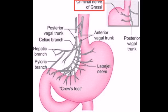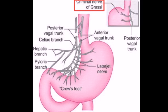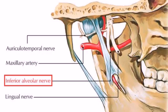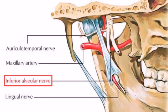What is the criminal nerve of Grassi? The criminal nerve of Grassi is a branch of the right posterior vagus nerve. Which nerve is the dental nerve? The inferior alveolar nerve.